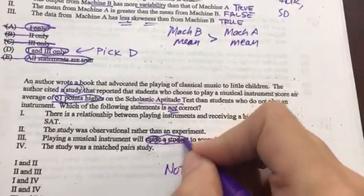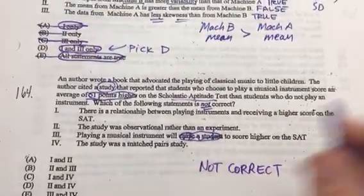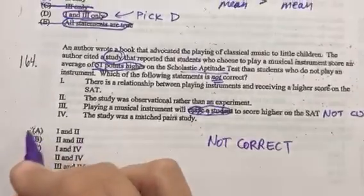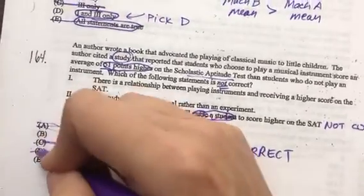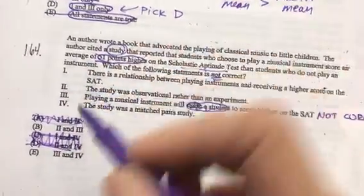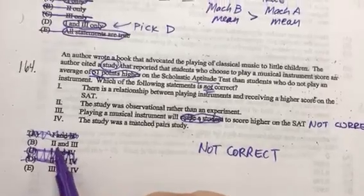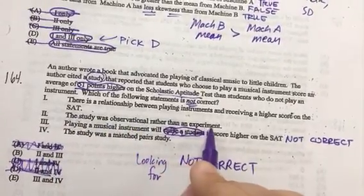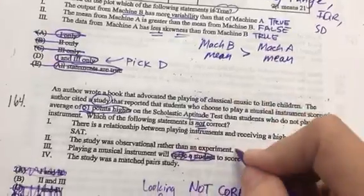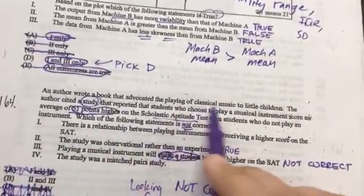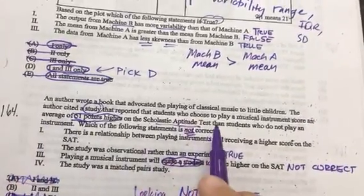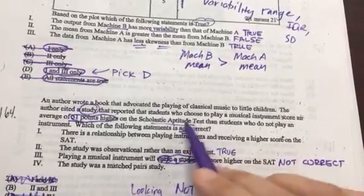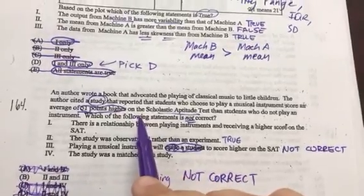Just glancing through here, if I can find a not correct: playing a musical instrument will cause students to score higher. Oh boy, we never say this—a causal link. Statisticians always avoid that, so we definitely know that statement 3 is not correct. Any choice that has 3 in it we know is going to be one of our choices, so I'm just going to narrow it down for us here. Now I'm trying to figure out is statement 2 not correct?